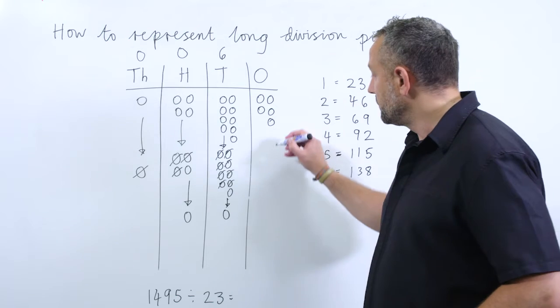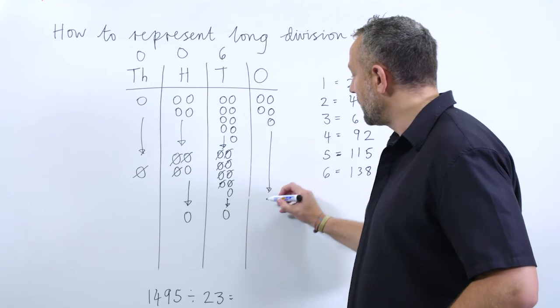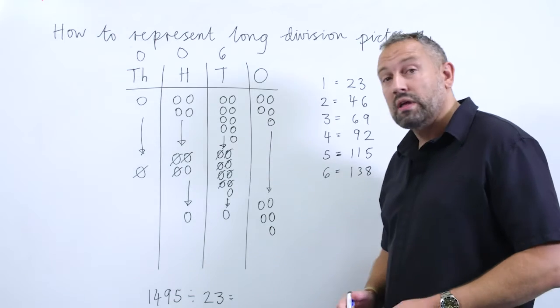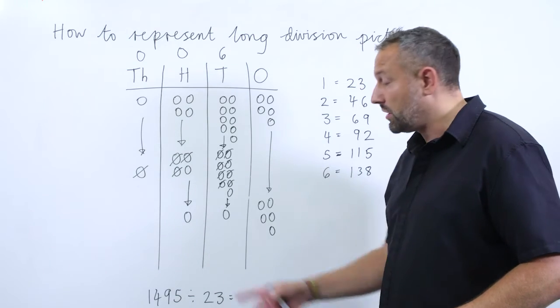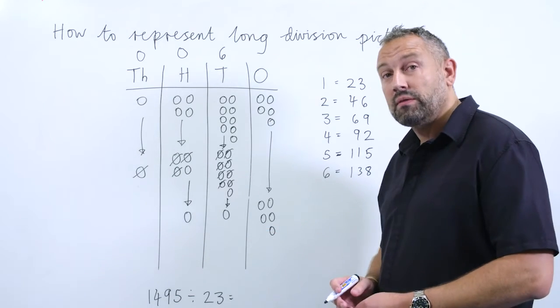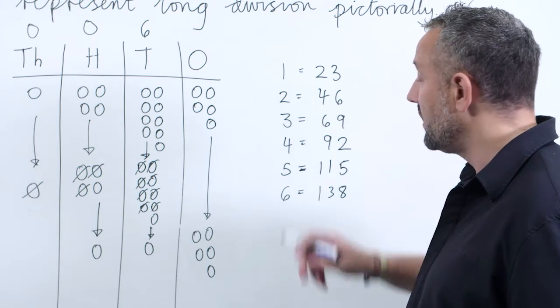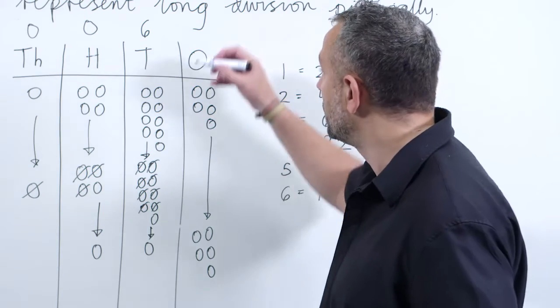We then move into the ones column where we have five, which means that our number using the place value chart is 115. Again, we look at our chart here and we can see that 115 is five lots of 23, and we can remove those.